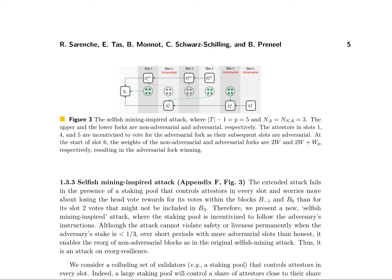The research paper discusses a novel attack on Ethereum's consensus mechanism, specifically targeting the reorg resilience. This selfish mining-inspired attack involves a staking pool controlling attestors in every slot, incentivized to follow an adversary's instructions. The attack succeeds when there are more adversarial slots than honest ones, enabling the reorg of non-adversarial blocks. A new reward mechanism, called DAG Votes, is proposed to mitigate this attack and ensure a fairer reward distribution.